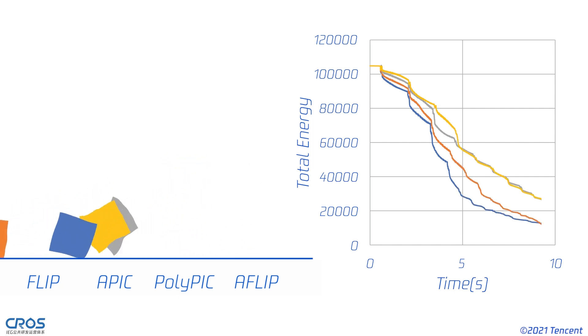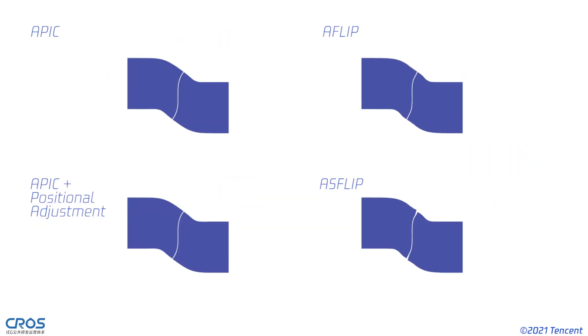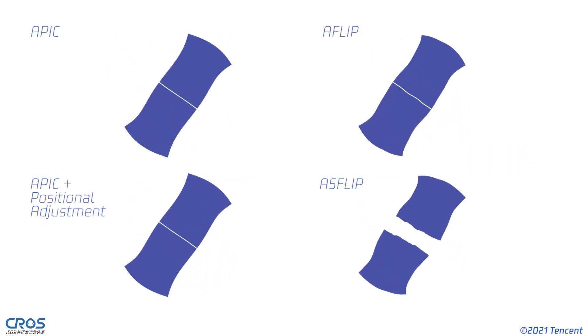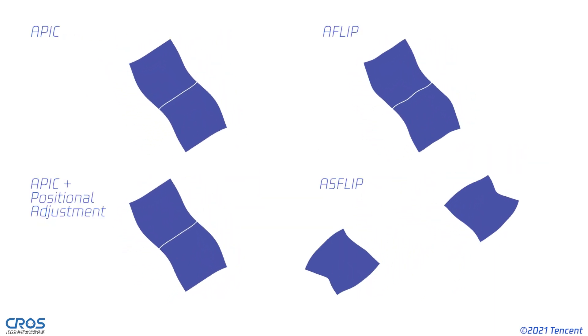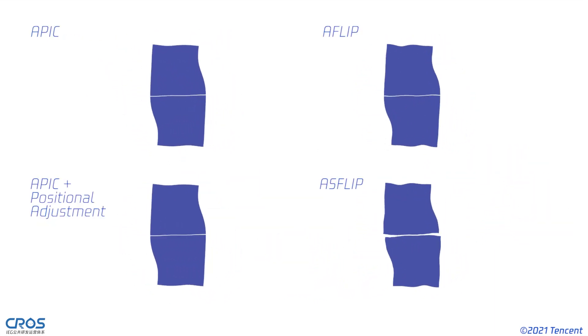We further enhance AFLIP with positional correction to encourage particle separation and name it ASFLIP. Only with both the positional and the velocity adjustment, the squares can separate.